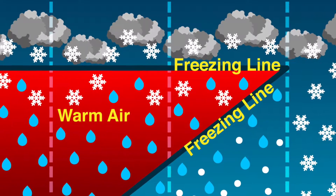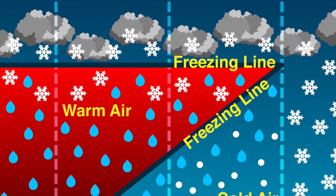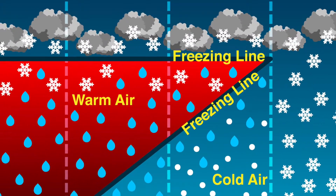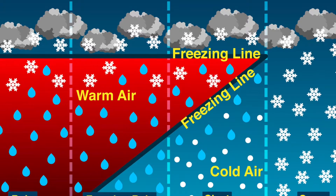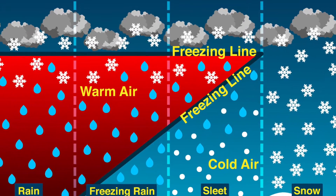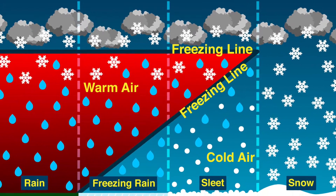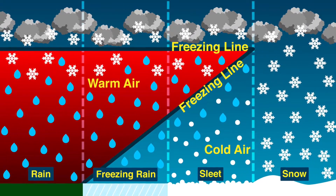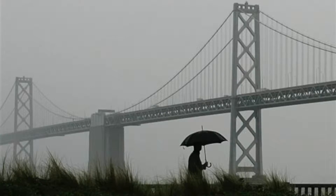According to EarthGauge.net, in the winter, precipitation usually starts out as ice or snow crystals at cloud level. The type of precipitation that falls from the clouds and reaches Earth's surface depends on the temperature of the air it falls through.